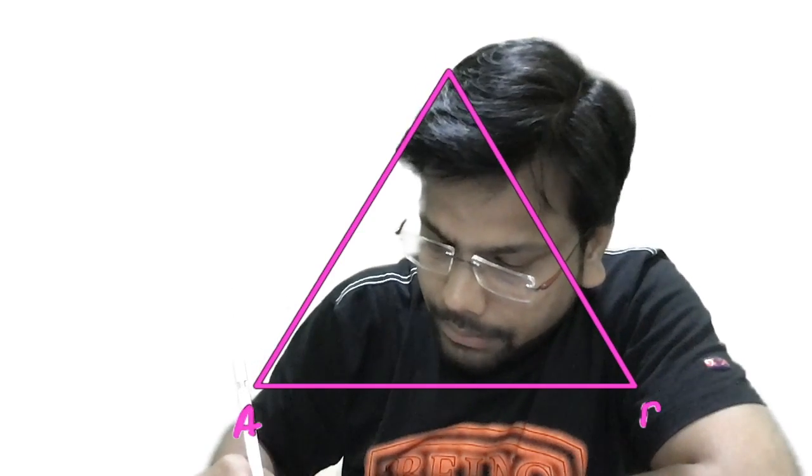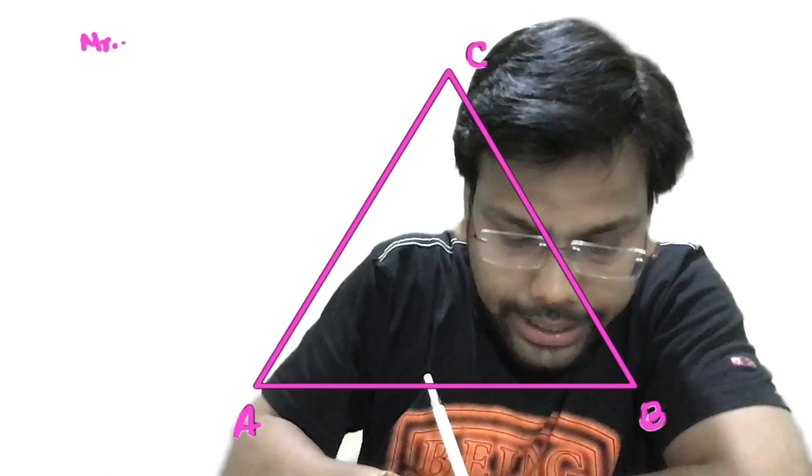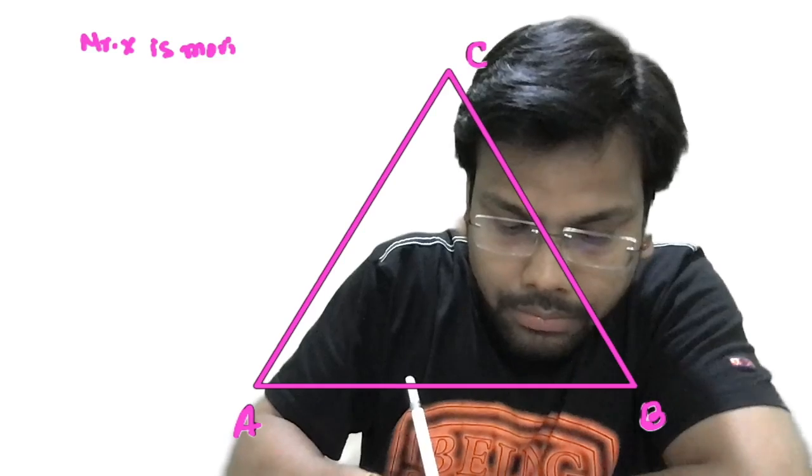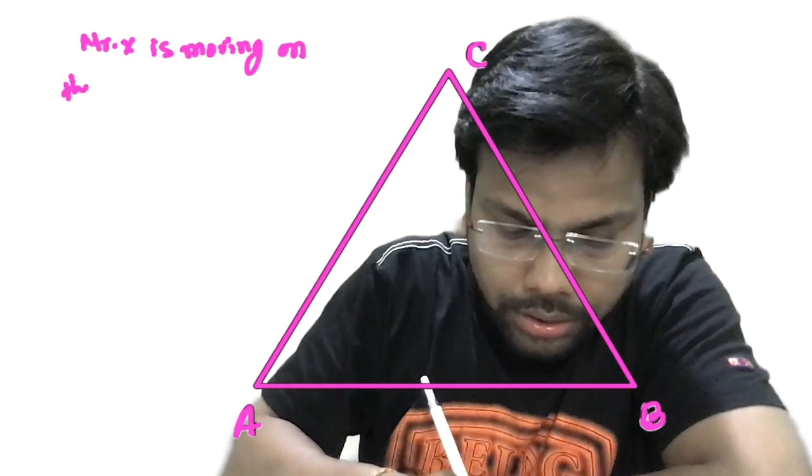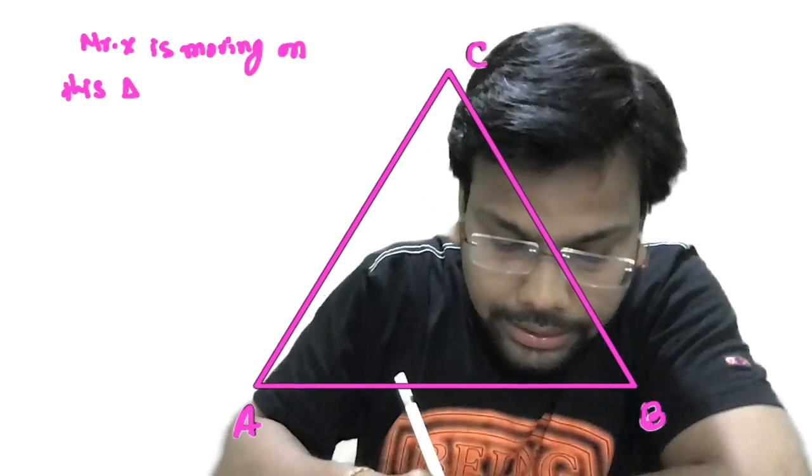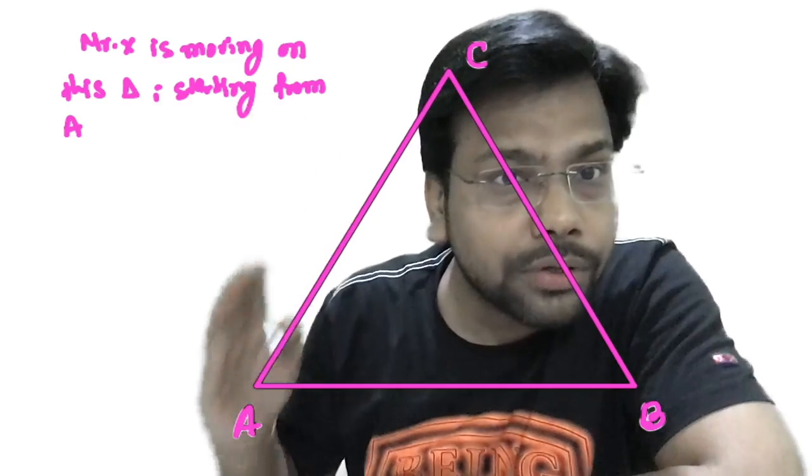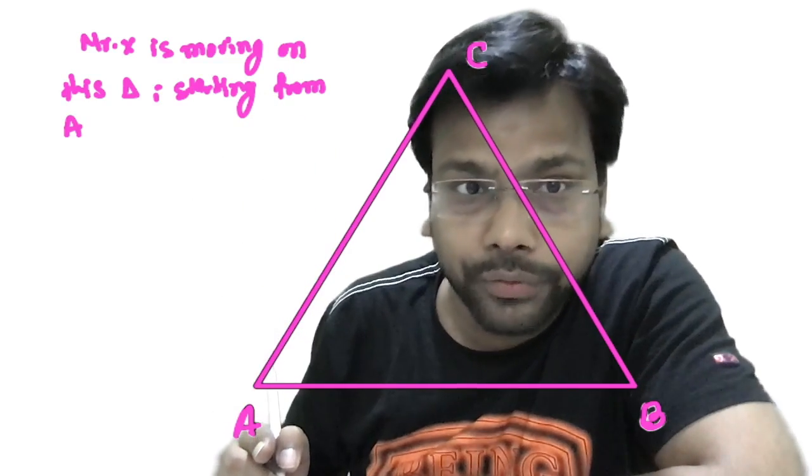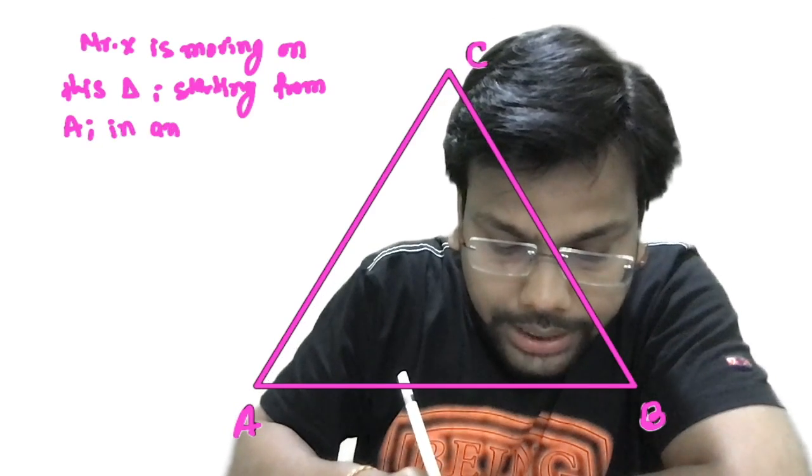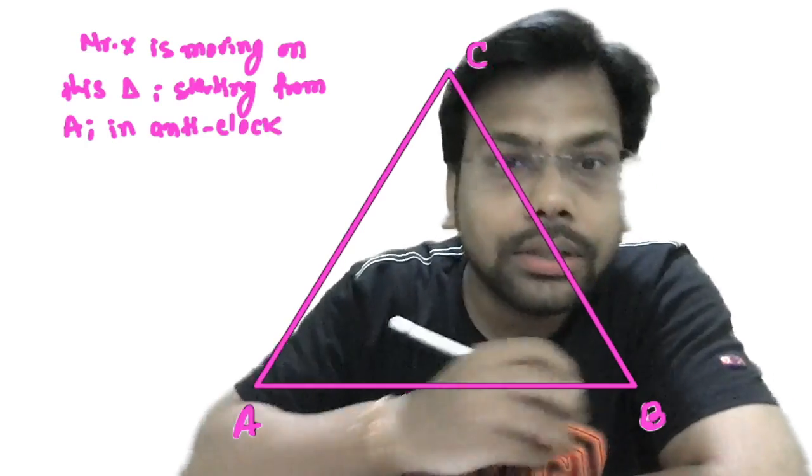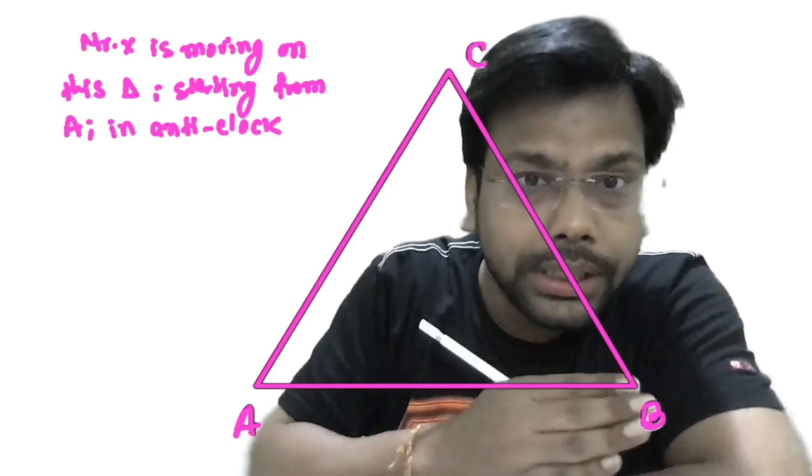I am creating a triangle. So we have an equilateral triangle, say I name it ABC. This one is nothing but an equilateral triangle, so the name is A, B, and C. ABC is an equilateral triangle. I'll take any name, say Mr. X is moving on this triangle starting from A, in anti-clockwise direction. So Mr. X is moving A to B, B to C, and C to A without any time loss. What does it mean? It means Mr. X is moving at continuous speed: A to B, B to C, C to A, then B, then C, and A. It's a continuous journey without any time loss.